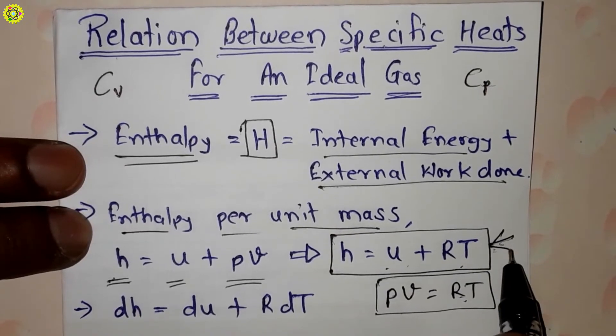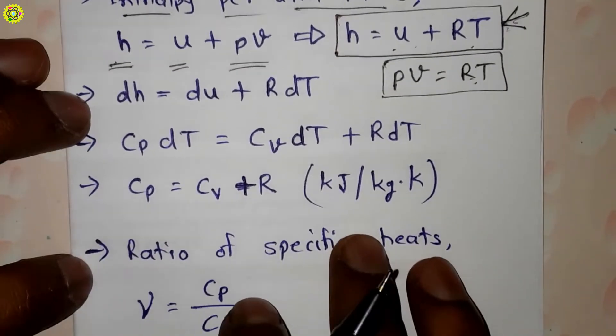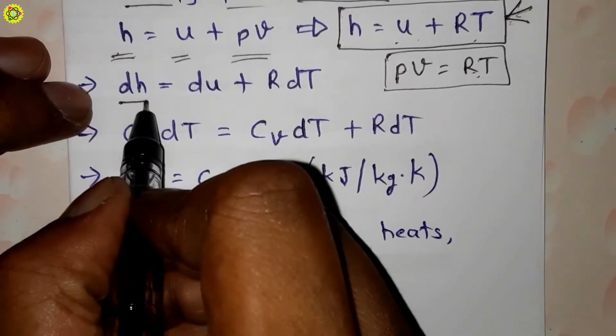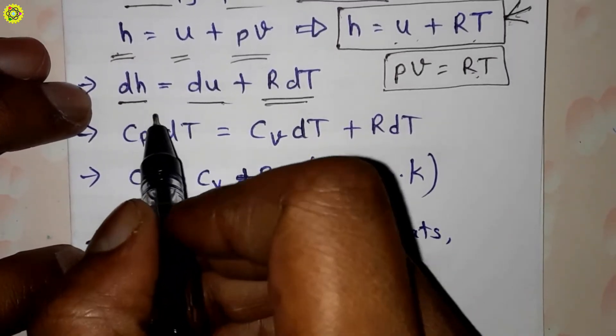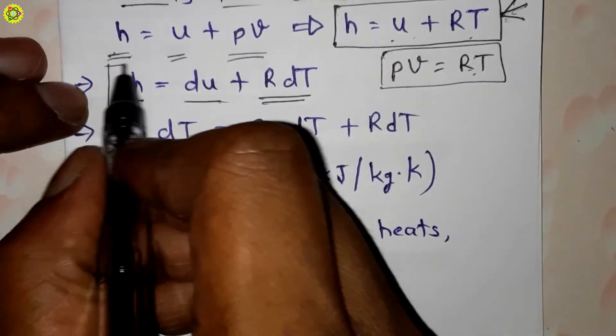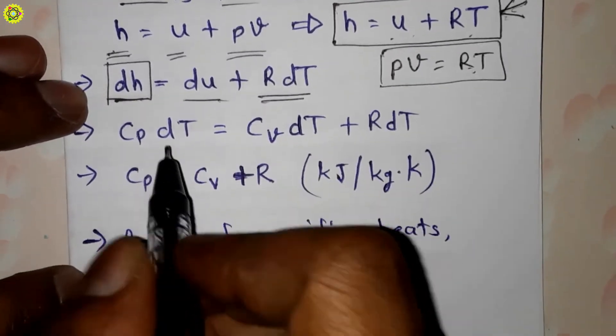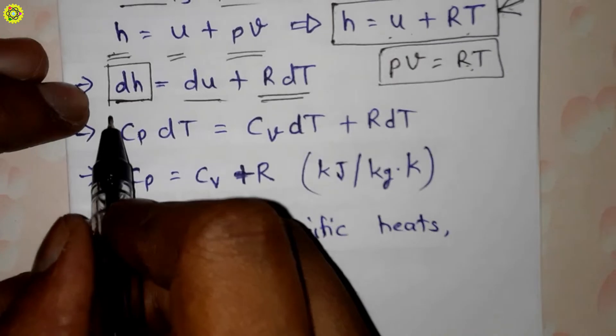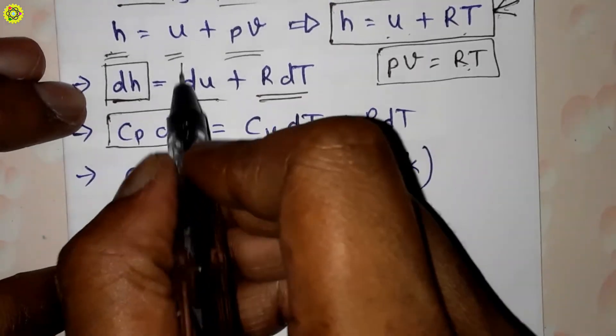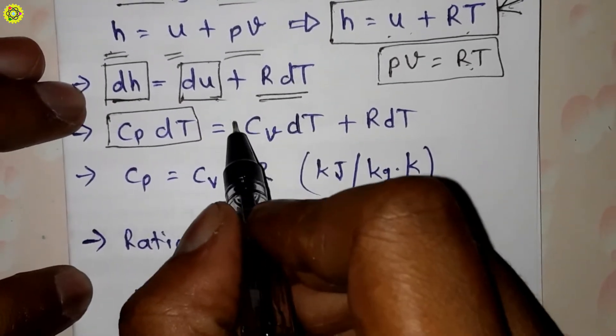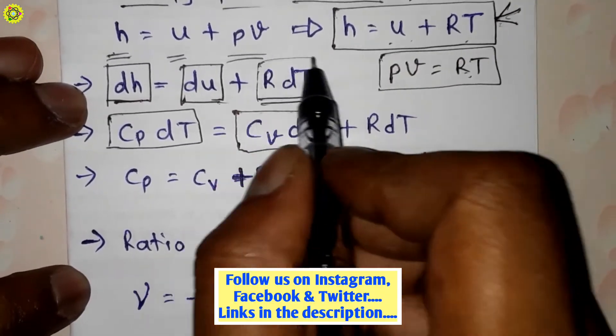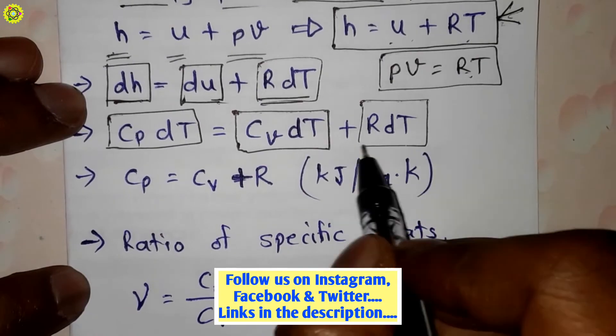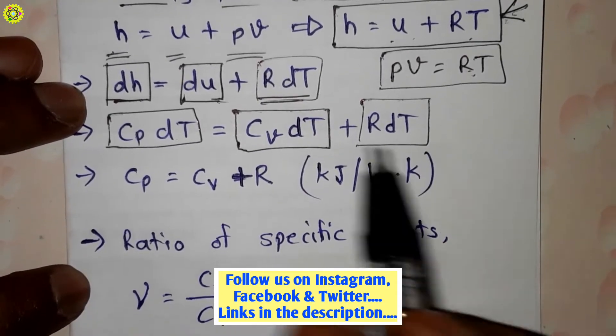From that we will get this equation: dh equals du plus R dT. Now this dh can be written as Cp dT, and this du can be written as Cv dT, and this R dT is as it is, plus R dT.